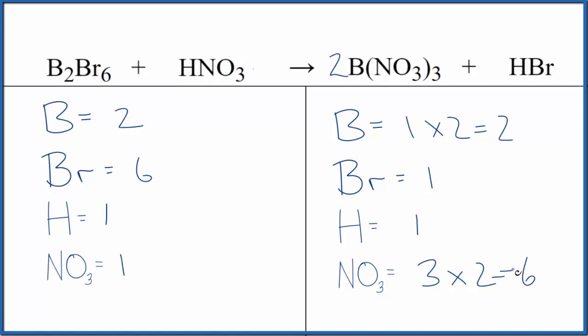It looks like we could put a six in front of the nitric acid now. So we have our one nitrate times six, and that would balance the nitrates. Then one times six for the hydrogen gives us six of those.